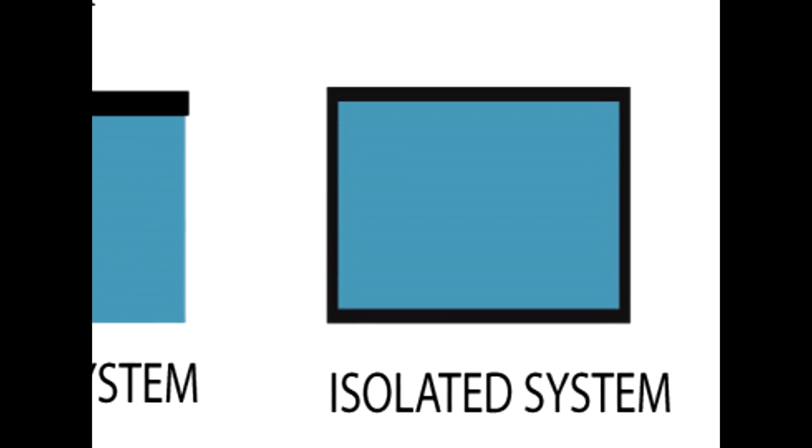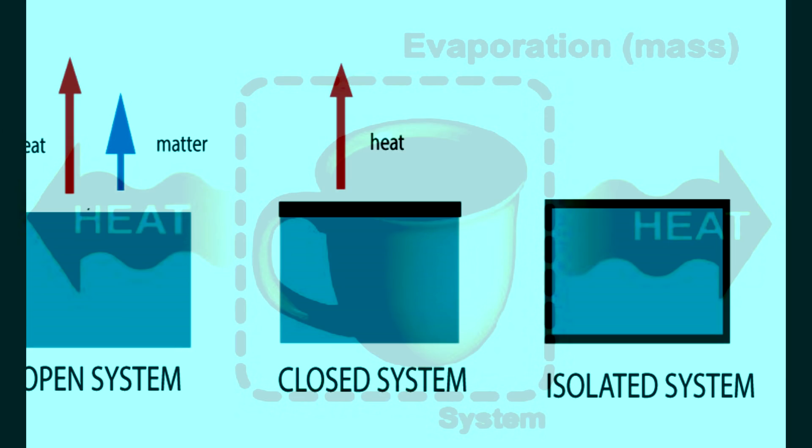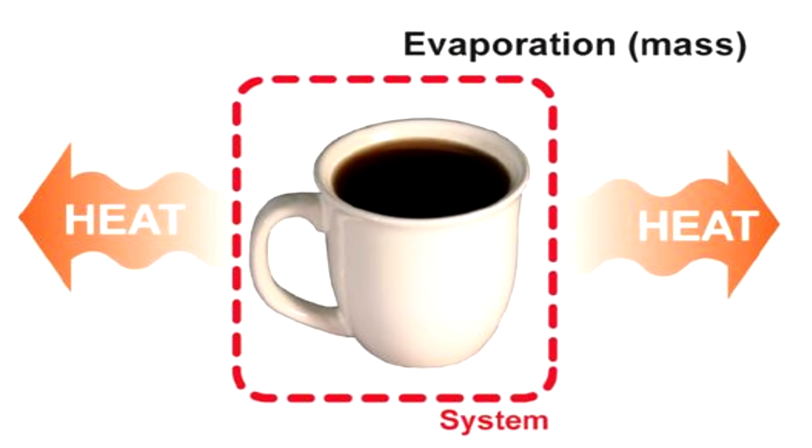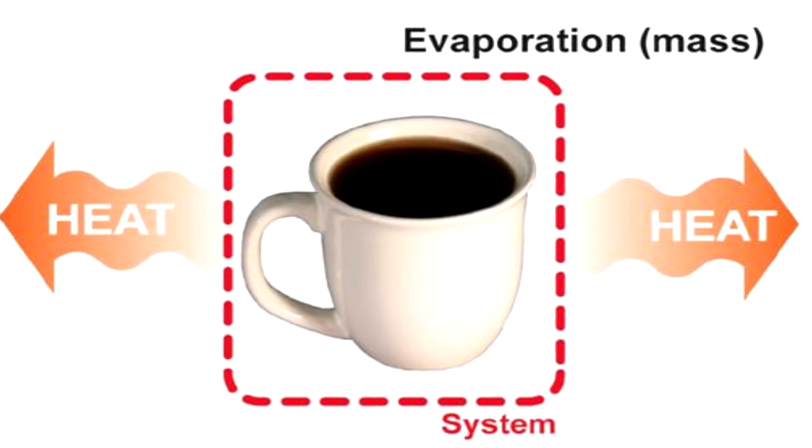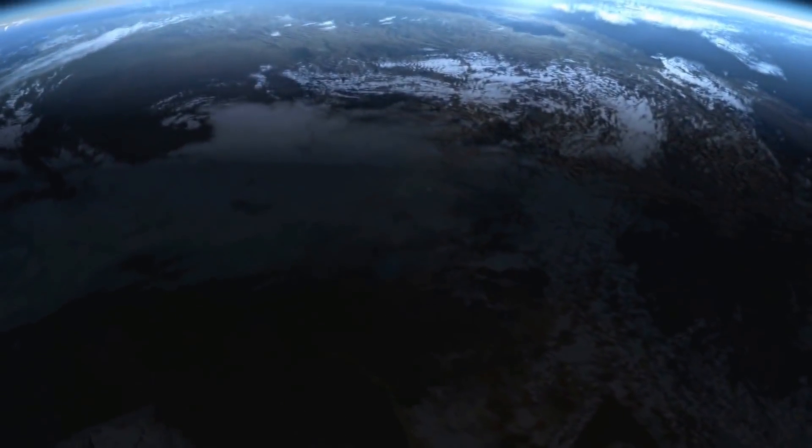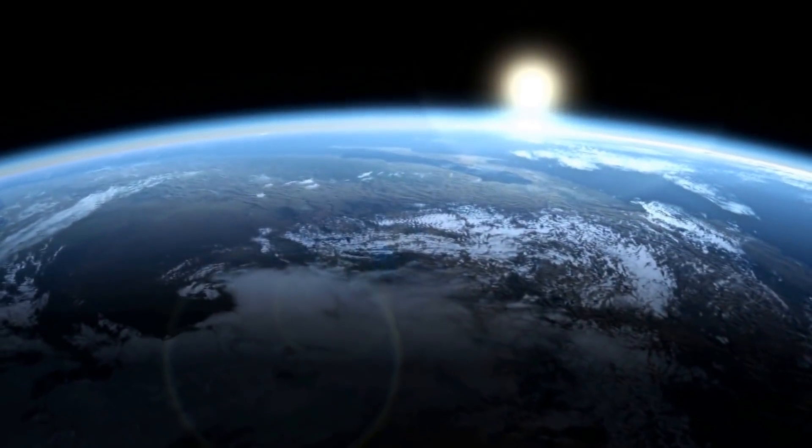In nature a perfectly isolated system does not exist, as there will always be some form of energy transfer. Your cup of tea for example is an open system. It radiates energy in the form of heat and loses mass through evaporation. The earth is an open system as well, it regularly exchanges both mass and energy with its surroundings.